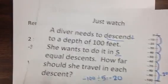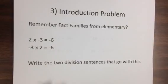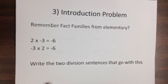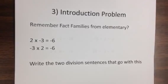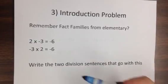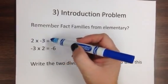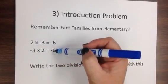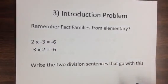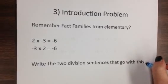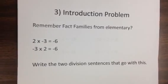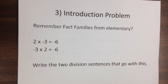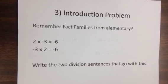Okay, the next thing, number three in your journal, write down the introduction problem. Remember, fact families from elementary? We're going to do the same thing, but I want you to think about the division sentences that go with this now. If two times negative three is negative six and negative three times positive two is negative six, you learned those yesterday, what two division sentences could go with this? Tell me what two division sentences would use these exact numbers. I'll give you a second to think about it or you can pause first.